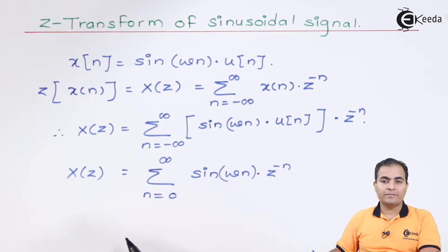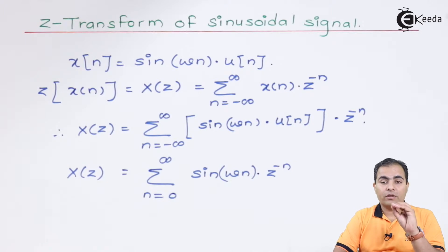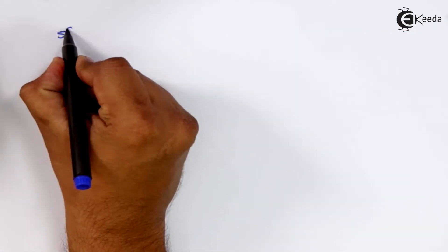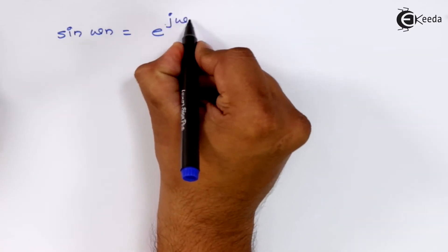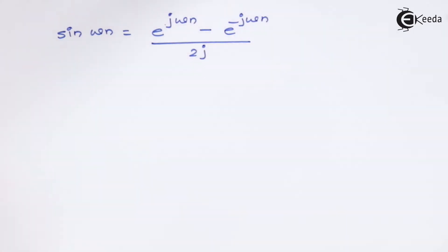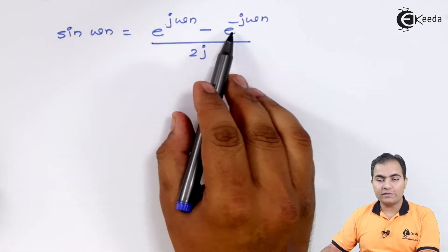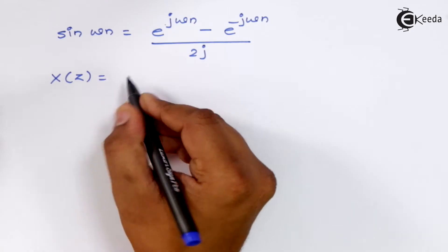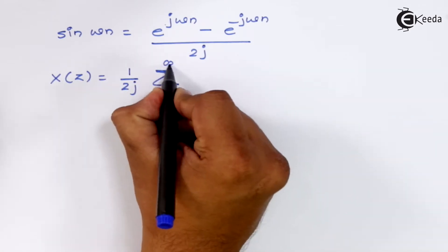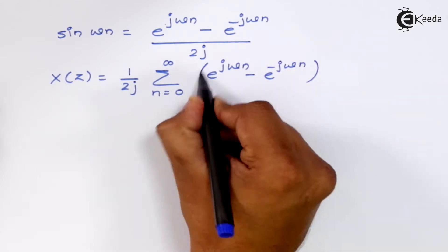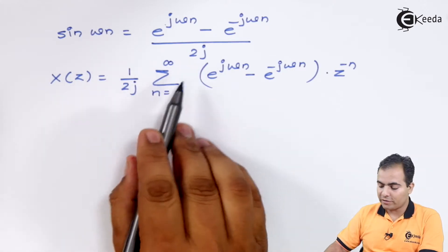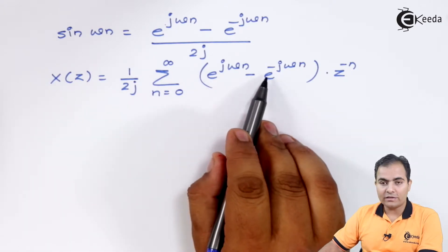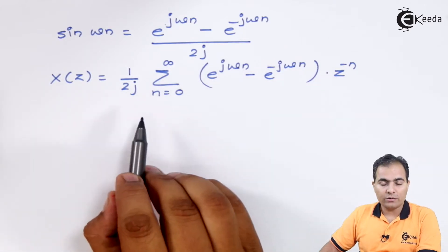We have the formula: sine(θ) = [e^(jθ) − e^(−jθ)] / 2j, which is the complex form of a sinusoidal wave. So, sine(ωn) = [e^(jωn) − e^(−jωn)] / 2j. I am going to substitute this value. I have taken 1/(2j) as a common constant outside the summation, since all the e^(jωn) and z^(−n) terms depend on n, whereas 1/(2j) is independent of n.